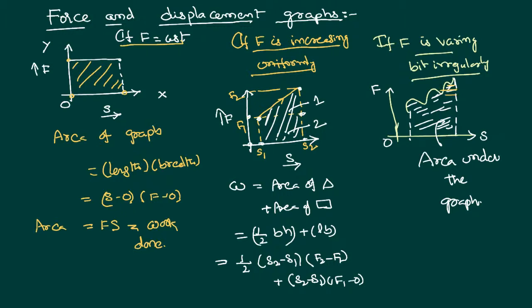By dividing this graph into small segments, then calculating the area of each segment, and adding the areas of all these segments together, we get the total work done under the graph.